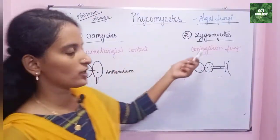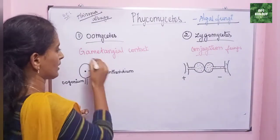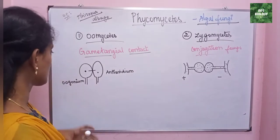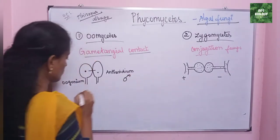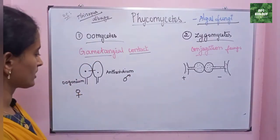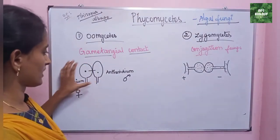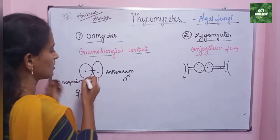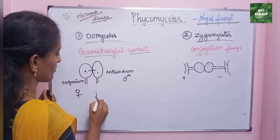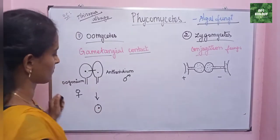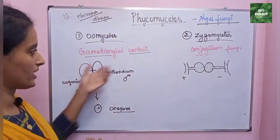In Oomycetes, it is known as gametangial contact. What is gametangial contact? Oogonium and antheridium — the antheridium is considered the male and oogonium is considered the female. These are two types of strain. Oogonium is one strain and antheridium is one strain. These two strains share gametes, and spores form from this — this spore is called oospore. This is the gametangial contact.